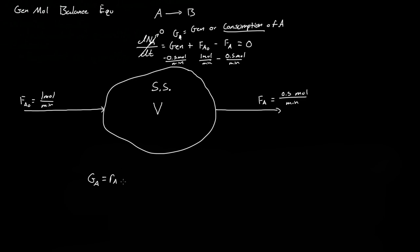RA is dependent upon the total volume of the system. If we had a bigger system, we'd have more A being consumed than in a smaller system. For example, if this were just a thin pipe, A would just flow right through with very little consumed. But in an enormous system, most of A would be consumed. So increasing volume increases GA, and decreasing volume decreases GA.